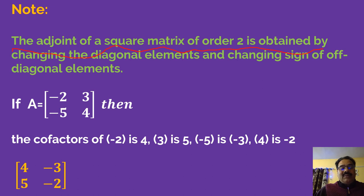Just to check: the diagonal elements are minus 2 and 4. You change the diagonal elements, so 4 goes here and minus 2 goes here. And the sign of off-diagonal: this is 3, it becomes minus 3. This is minus 5, it becomes 5. So accordingly, using this property you can very easily write the adjoint of a square matrix.